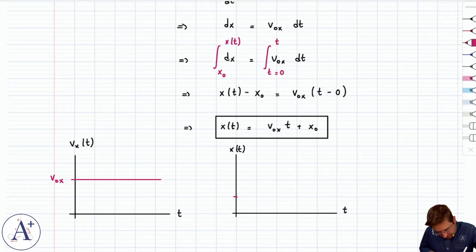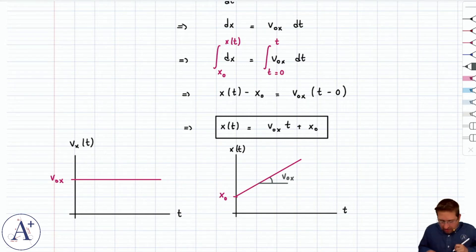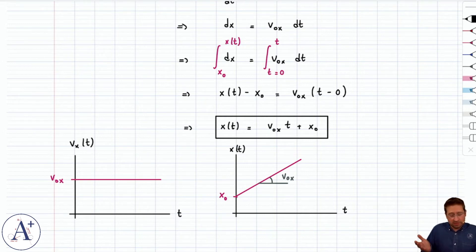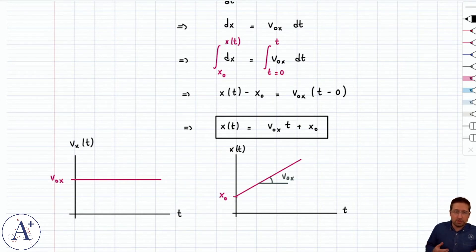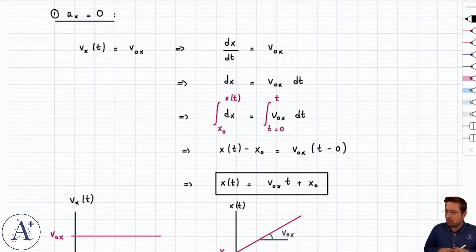For position x(t), the graph has a y-intercept of x₀ and a slope of v₀ₓ. The slope of this straight line indicates v₀ₓ. Position increases linearly with time because velocity is constant. Note that the slope of the line equals the slope of the tangent line in this case, which equals the velocity — that's the definition of a derivative. If you have a straight line, then the tangent line is the straight line itself.